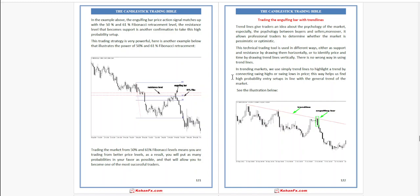This technical trading tool is used in different ways — either as support and resistance by drawing them diagonally, or to identify price and time by drawing trend lines vertically. There is no wrong way in using trend lines. In a trending market, we use trend lines to highlight a trend by connecting swing highs and swing lows, which helps us find high-probability entry setups in line with the general trend.